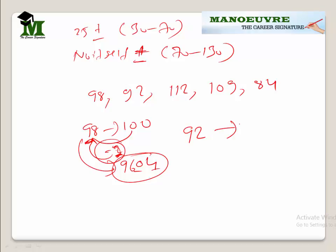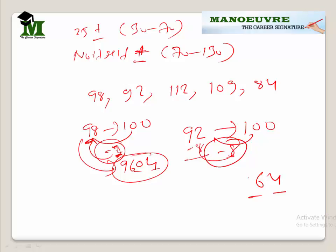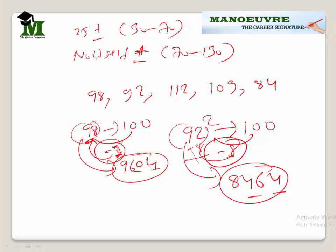Likewise, for 92 squared, compare by 100 — it is 8 less. 8 squared is 64, always 2 digits. Since it is 8 less, subtract 8 from 92 to get 84. So 8464 is your final answer. And 98 squared gives 9604.